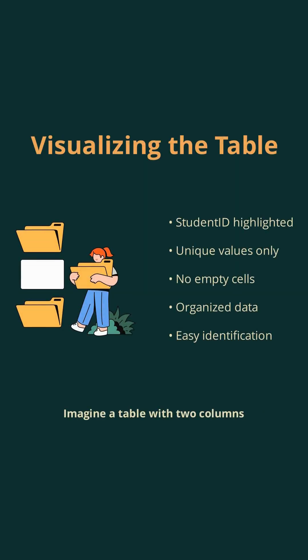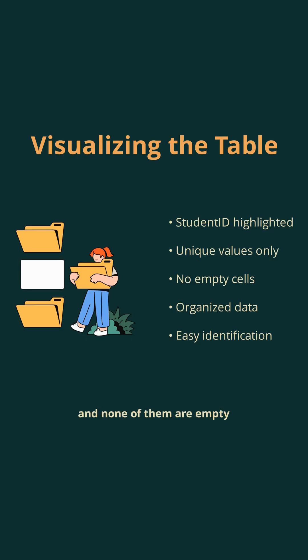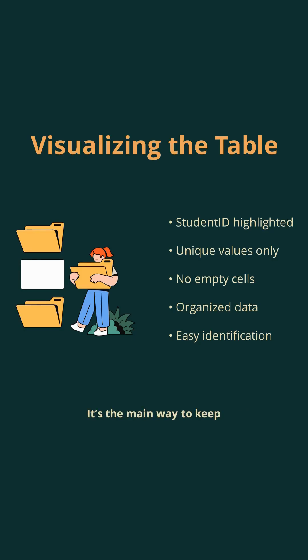Imagine a table with two columns: student ID and name. The student ID column is highlighted, showing that it is the primary key. Each row has a different student ID and none of them are empty. This visual helps us understand how the primary key works in practice. It's the main way to keep each student's data unique and organized.